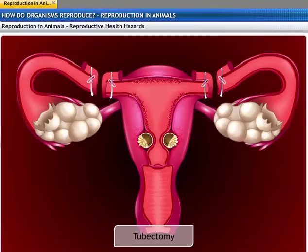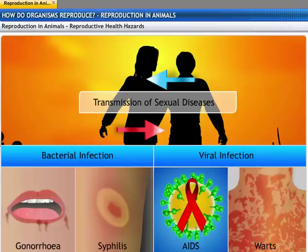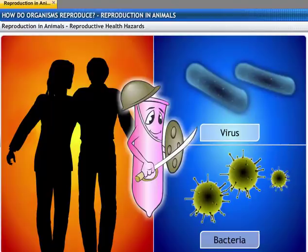These surgical methods also have side effects, so it is better to use a condom. During sex, there is close contact between bodies, which could result in the transmission of sexually transmitted diseases. Bacterial infections such as gonorrhea and syphilis, and viral infections such as warts and HIV/AIDS, are some diseases transmitted sexually. AIDS — Acquired Immunodeficiency Syndrome — is an infection causing havoc in humans today. Using a condom during sexual intercourse helps prevent the transmission of many of these infections to some extent, though it fails if not used properly.